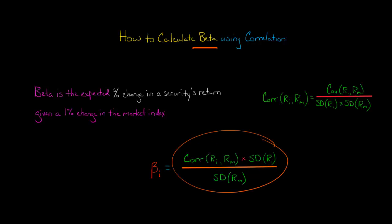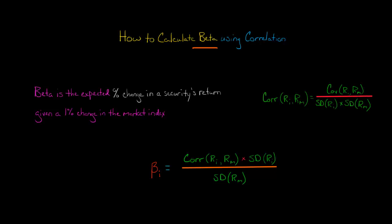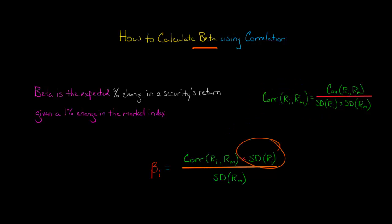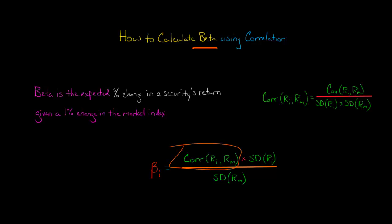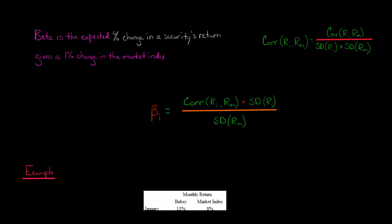I'm going to show you how to do all these calculations by hand instead of just giving the Excel formula. One note: to get the correlation, we first need to calculate the covariance of the returns of stock I and the market returns. That covariance is then divided by the cross volatilities — meaning the standard deviation of firm I's returns times the standard deviation of the market return. Once we have those, we can find the correlation, and then plug in the volatilities to get beta. In a class, they might just give you the correlation, but I'll show you how to do it all by hand.